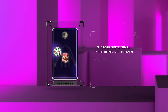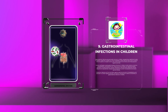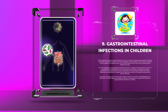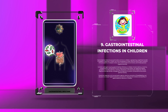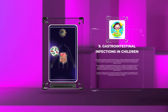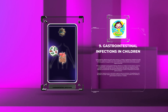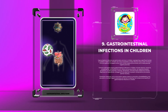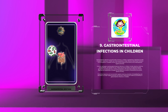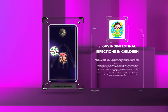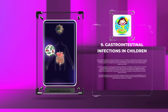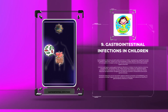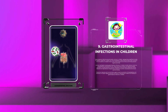Gastrointestinal infections are particularly common in children, representing a significant burden on pediatric healthcare. Children are more susceptible due to their immature immune systems, increased contact with contaminated environments, and limited personal hygiene practices. Common pathogens include Rotavirus, Norovirus, Campylobacter, and Escherichia coli. Infants and young children can experience severe symptoms including diarrhea, vomiting, dehydration, and electrolyte imbalances. Preventive measures such as vaccination against Rotavirus, promotion of breastfeeding, and education on proper hygiene practices are central to reducing the incidence and severity of these infections.